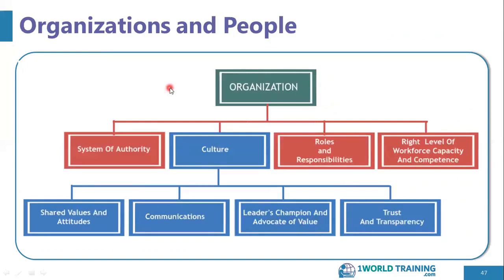This dimension also encompasses the communication approach and style or culture. For example, an organization may rely more on written communication than spoken communication, or vice versa. Also relevant are the attitudes, shared values and beliefs, and culture of the company — whether it is an innovation culture, a team culture, or a productivity-oriented culture. Management, leadership, trust, transparency, and collaboration are all part of this dimension.